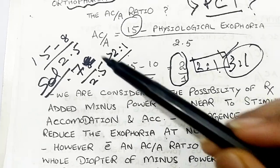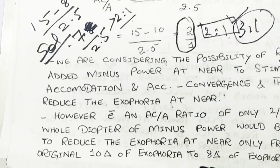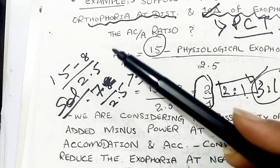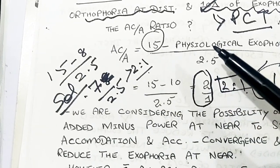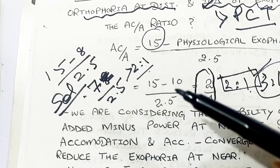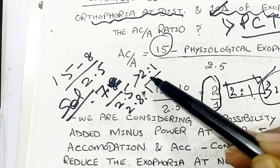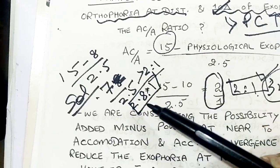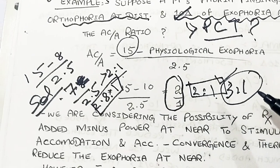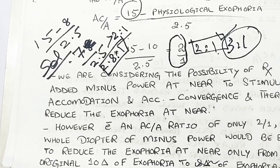A minus 1 diopter lens is needed to increase the ratio from 2 to 1 toward 3 to 1. For example, if a patient then has 8 prism diopters of physiological exophoria, the formula gives: 15 minus 8 divided by 2.5 equals 2.8 to 1 — near about 3 to 1 — and the patient gets relief from convergence insufficiency symptoms.